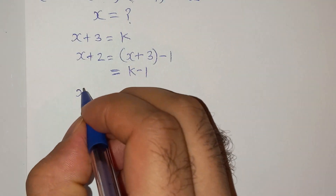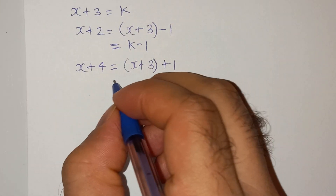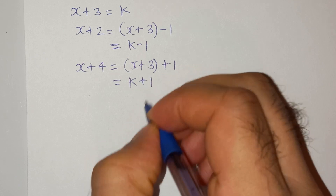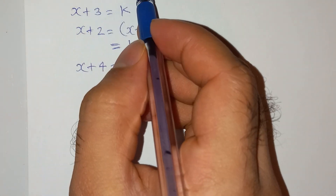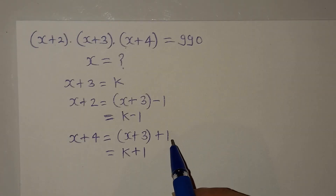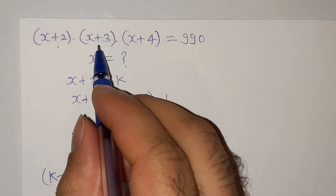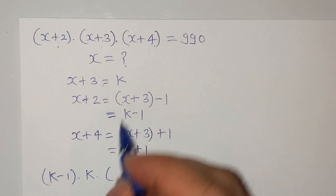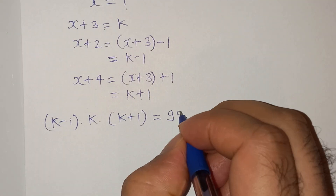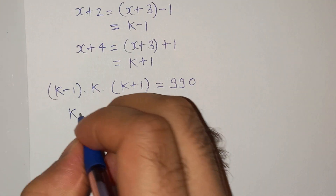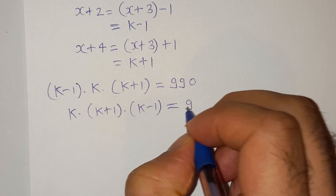Now x+4 can be written as x+3 plus 1, and since x+3 is k, it will be k plus 1. Now putting all these values into the equation: x+2 is k minus 1, x+3 is k, and x+4 is k plus 1, all equals to 990. Rearranging, we get k multiplied by (k+1) multiplied by (k-1) equals to 990.